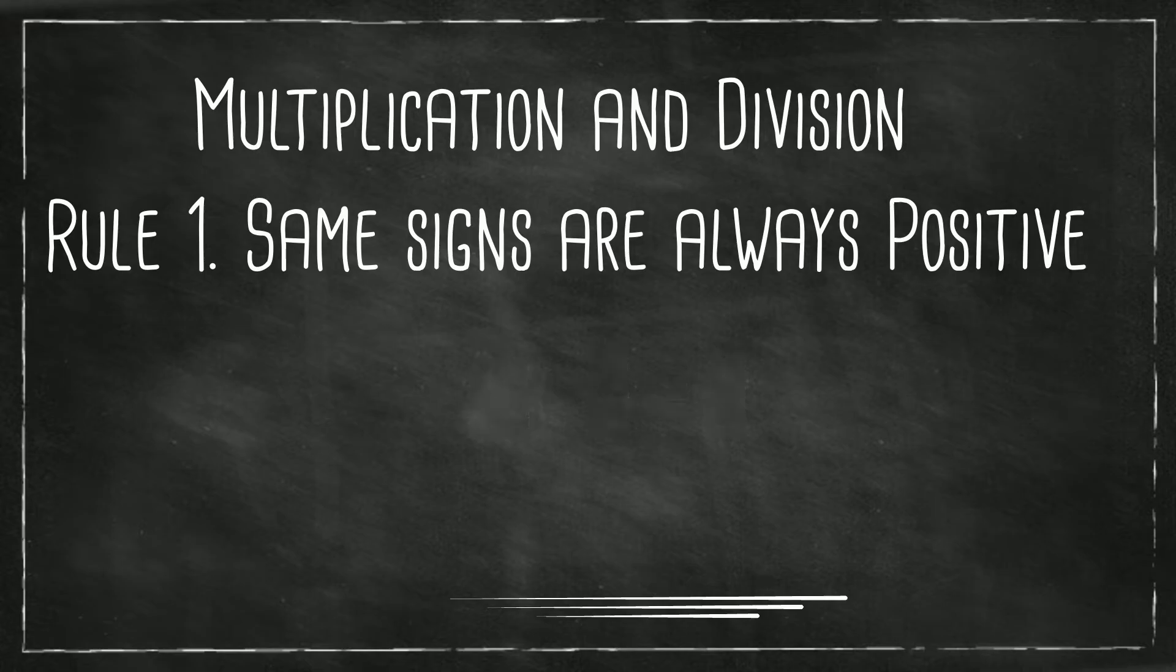Let's look at division. Positive 6 divided by positive 3 equals positive 2. And then a negative 10 divided by a negative 2 equals a positive 5.